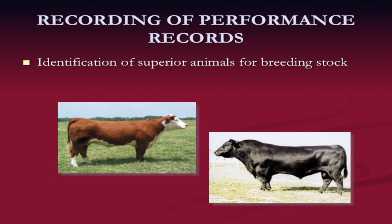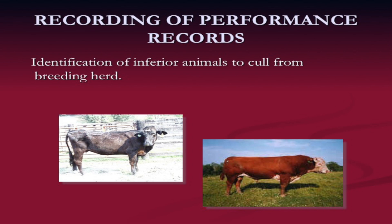We want to identify those superior animals for breeding stock — extremely important for purebred producers to market those cattle and bring them back into the herd. On the flip side, we want to identify animals to cull from the herd — maybe a cow weaning a calf 100 pounds lighter than the herd average, or a cow that missed a calf two years ago during a drought. Identifying inferior animals that bring down profitability is just as important as identifying superior ones.